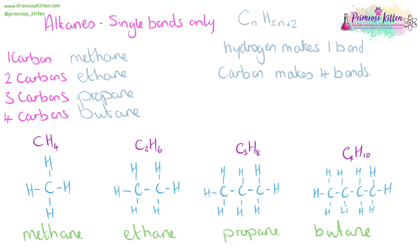And we can see the formula for these follows our general formula of CnH2n plus two. So methane has one carbon and four hydrogens, ethane two carbons, six hydrogens, propane three carbons, eight hydrogens, and butane four carbons and ten hydrogens.